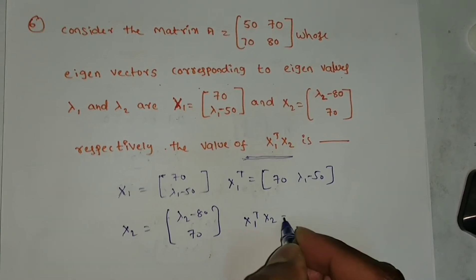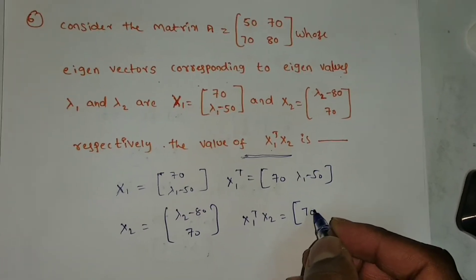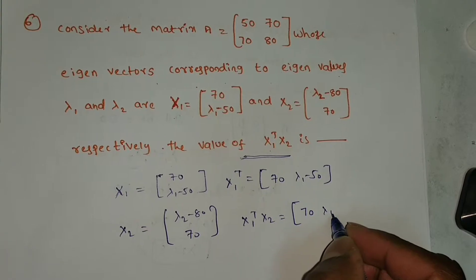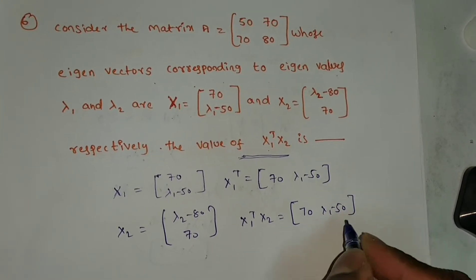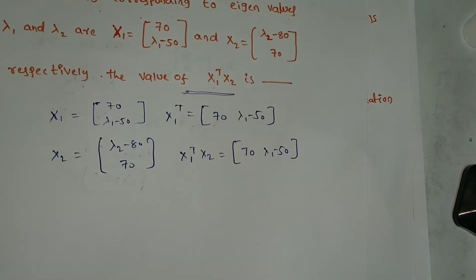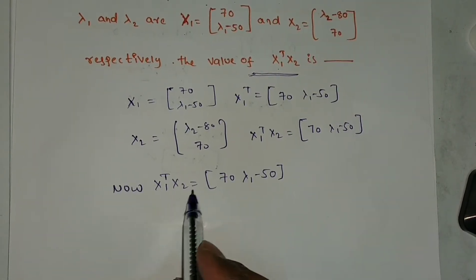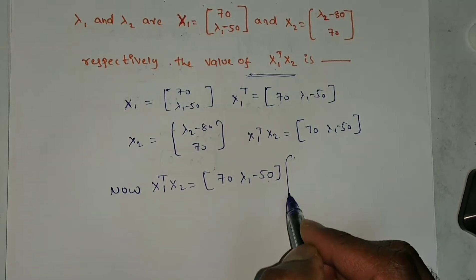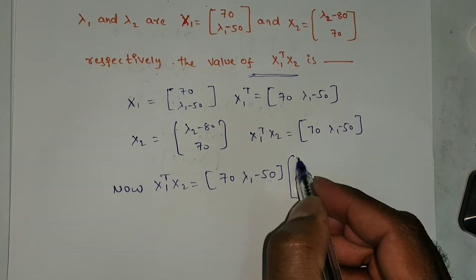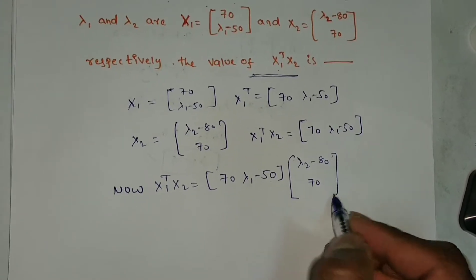Now what I want actually is x₁ transpose into x₂. What is x₁ transpose? [70, λ₁ - 50] into x₂, which is [λ₂ - 80, 70]. Now do the product for this.